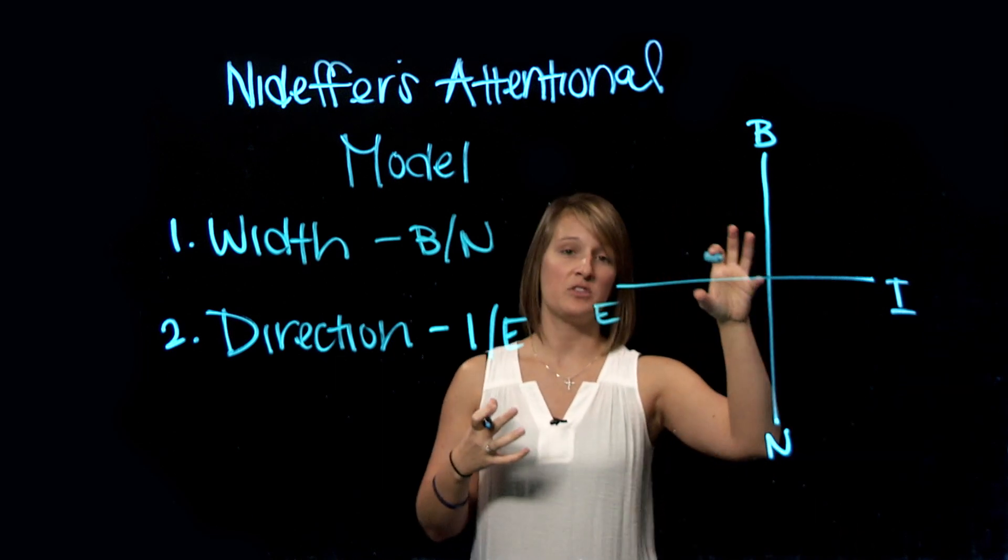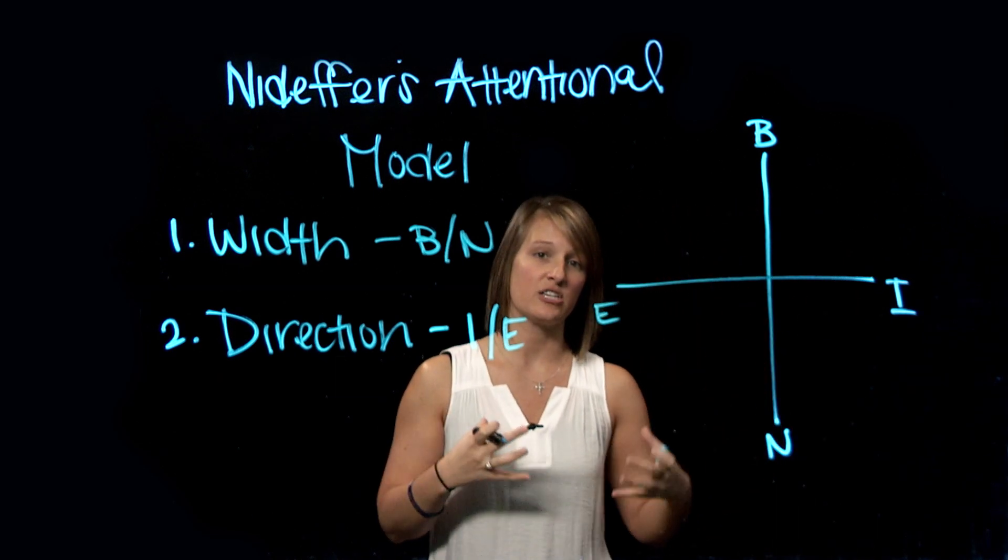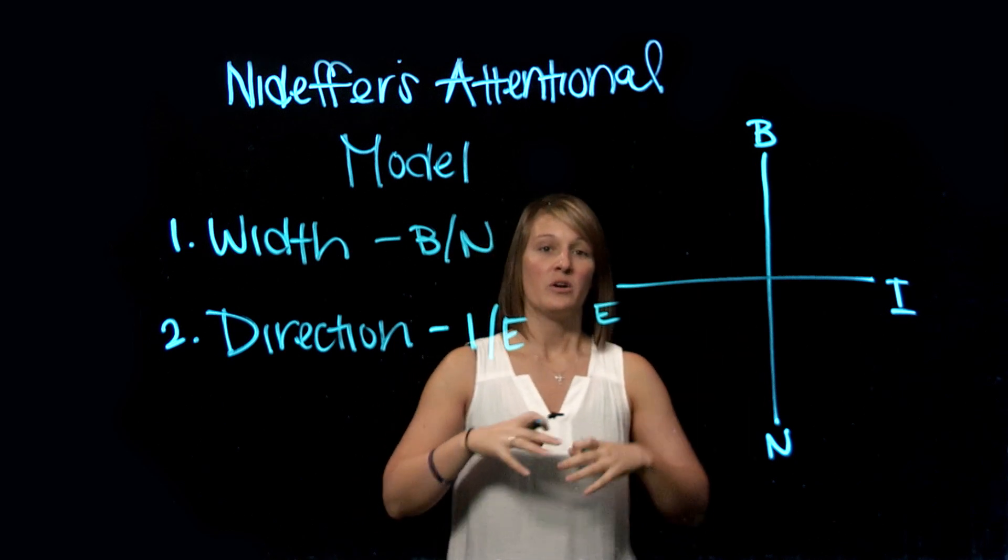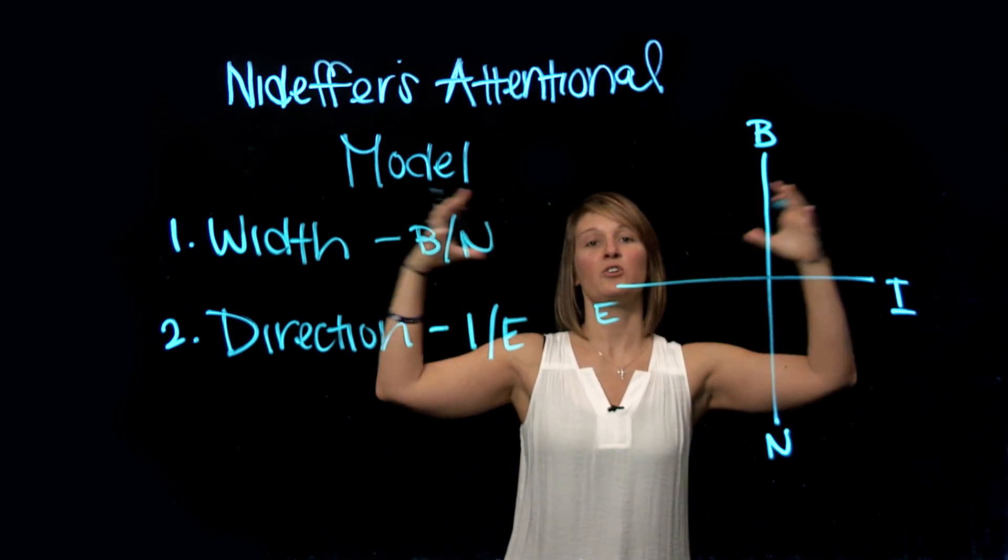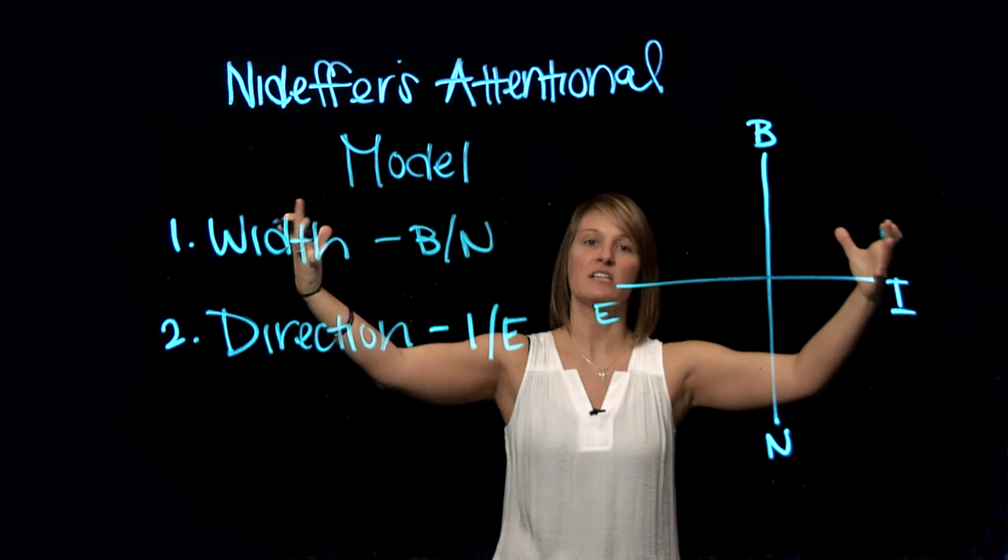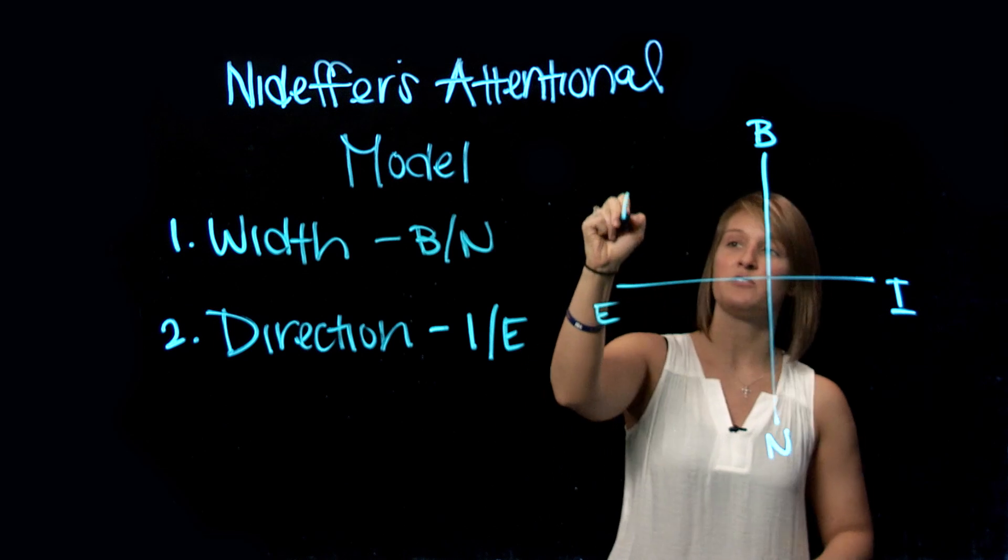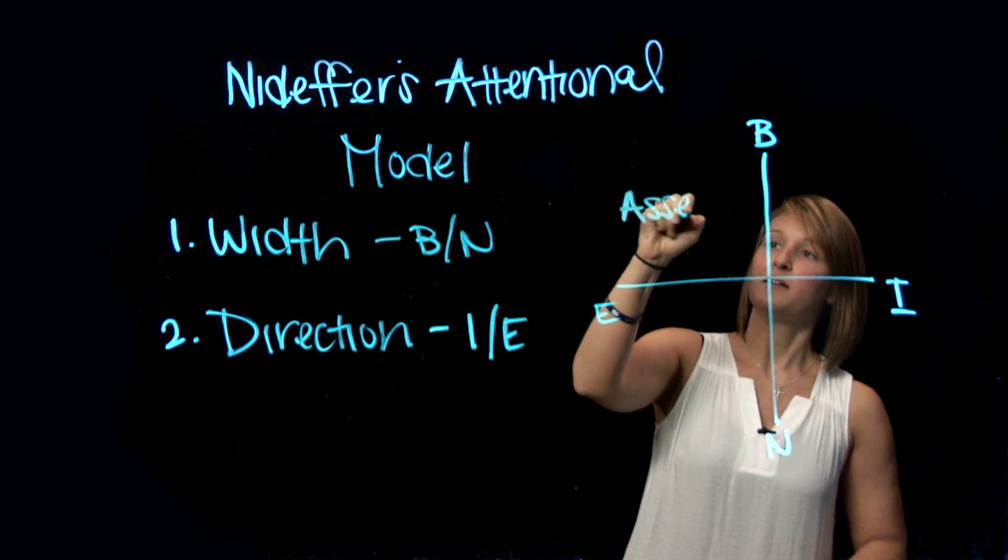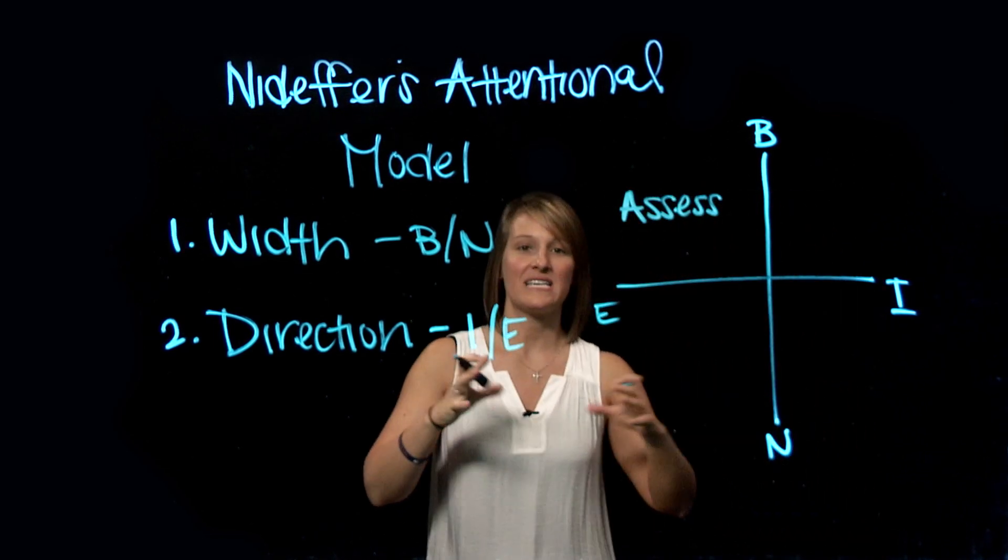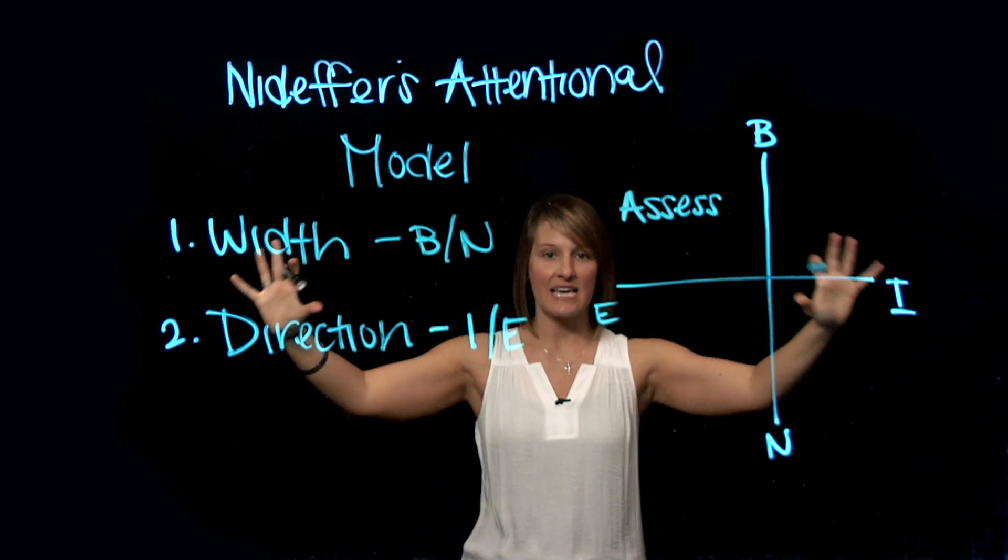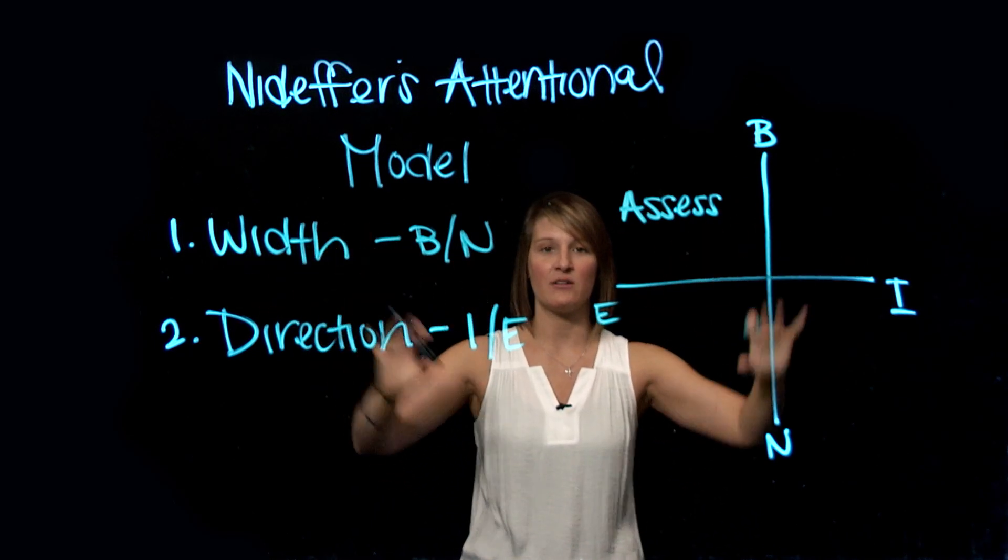So we end up, as you can see, with these four quadrants where our attention can go. So let's start with broad external. When our attention is broad and external, we're looking outside of ourselves to get as much of a picture of what's happening around us as possible. And it's said that when we're in this quadrant, we're assessing. We're looking at what's happening. We're assessing the situation, right? We're trying to take it in, see everything that we can about what's outside of ourselves.